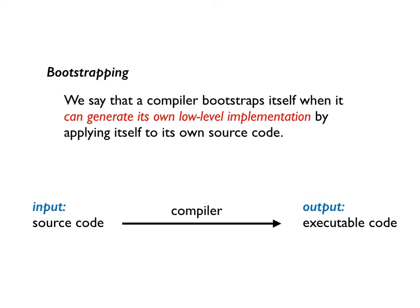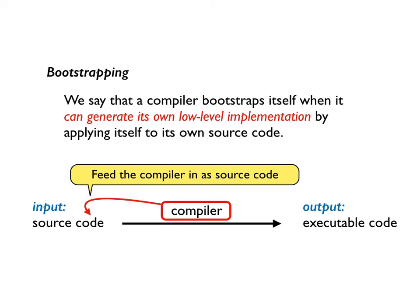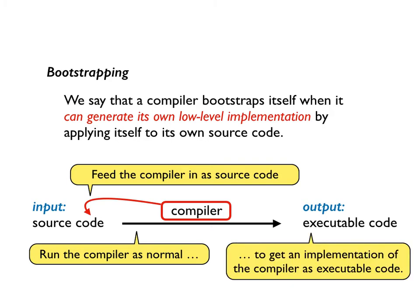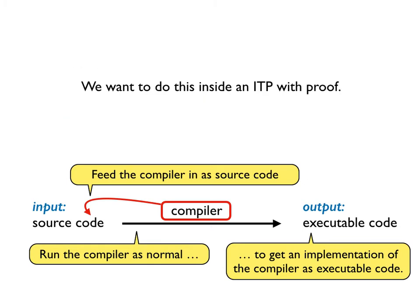Bootstrapping then? We say that a compiler bootstraps itself when it can generate its own low-level implementation by applying itself to its own source code. The idea can be illustrated as follows. The idea is to feed the compiler in as source code, run the compiler as normal to get an implementation of the compiler as executable code. And we want to do all of this inside an ITP with proof.